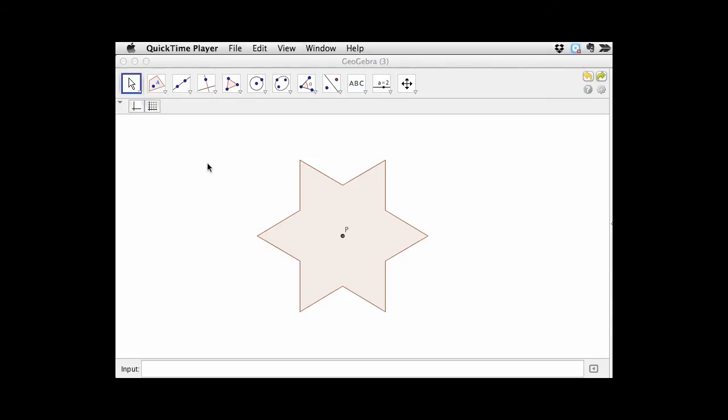This pentagon does not have point symmetry. So if we do the same thing with this pentagon, I'll reflect point H. Move it around a bit.